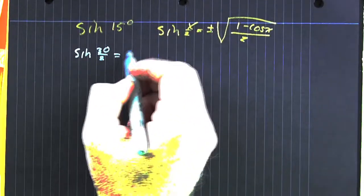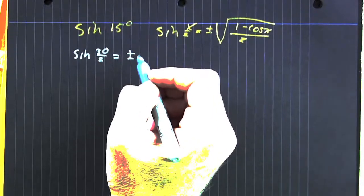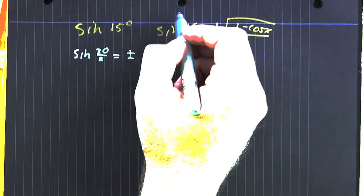So now, half of 30 is 15. That's why we're using 30. Plus or minus, don't want to forget that part.